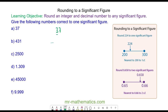To round 37 to one significant figure, it is between 30 and 40. Each of these numbers adds to one significant figure, and you can see the 37 is approximately here, which is nearer to 40 than it is to 30. So 37 is approximately 40 to one significant figure.